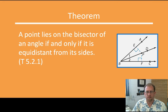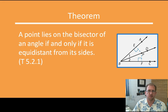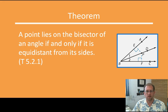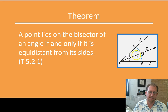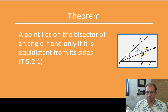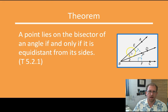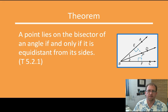We've talked about bisecting angles and segments before. Here we're going to look at another application of that and apply it to finding the center of a triangle. A point lies on the bisector of an angle if and only if it is equidistant from its sides. So one way of defining an angle bisector is that it's the set of points that are equidistant from the two sides of the angle.